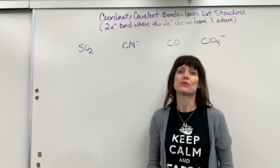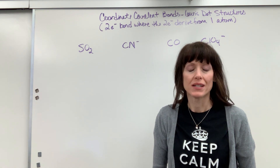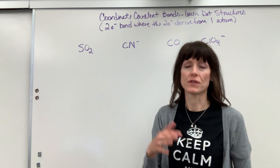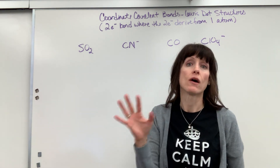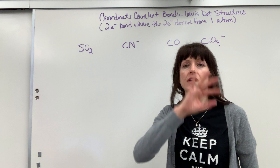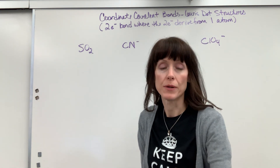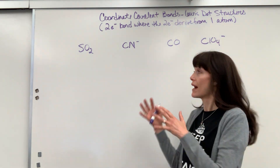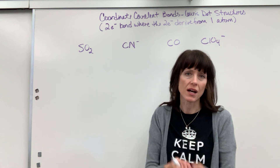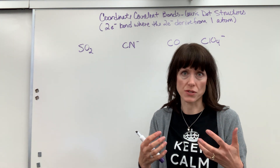We are going to do coordinate covalent bonds in Lewis dot structures. A little side note: you may have seen a method where you count the total number of valence electrons, figure out how many bonds you need, and fit everything in. That's a valid method, but it's not what I do — I don't use the counting method. There are great YouTube videos on how to do Lewis dot structures that way.